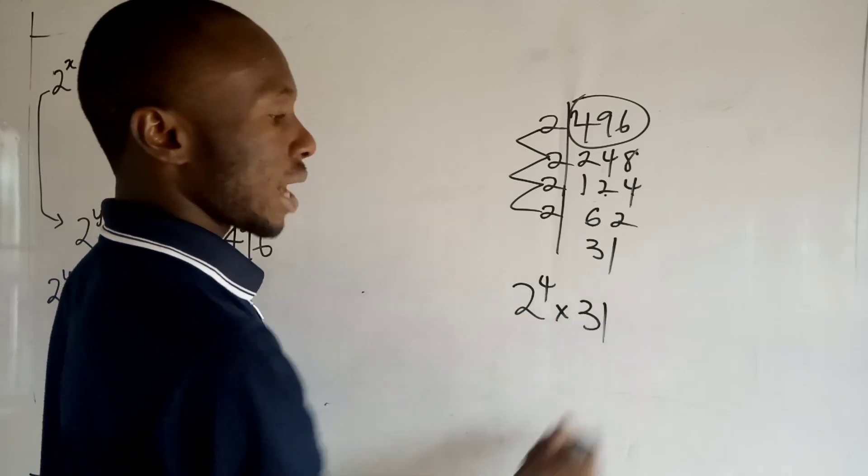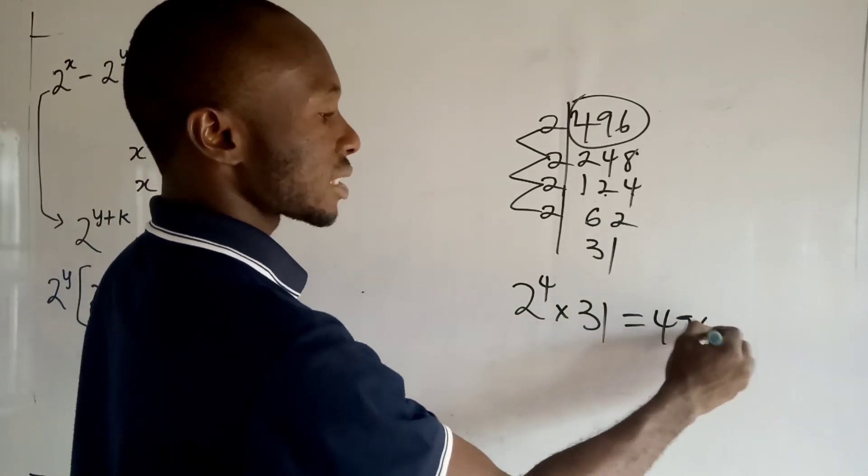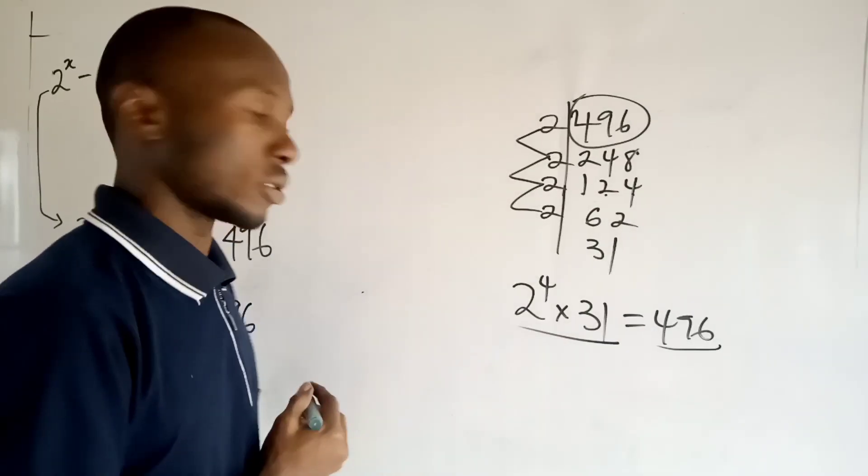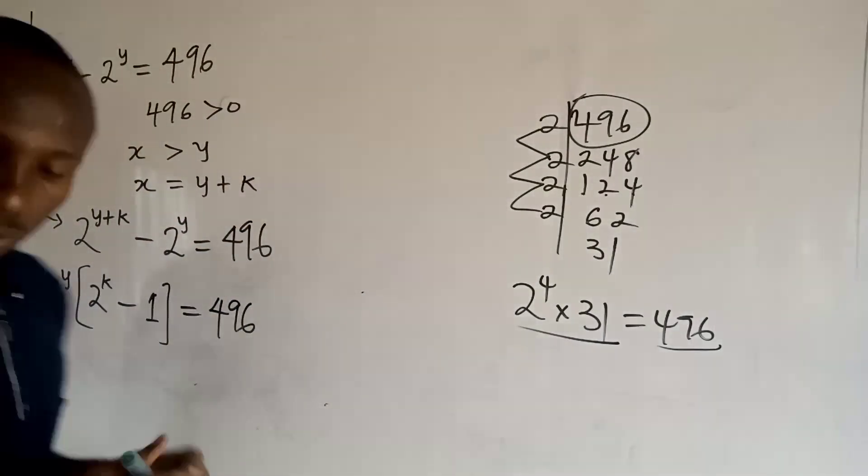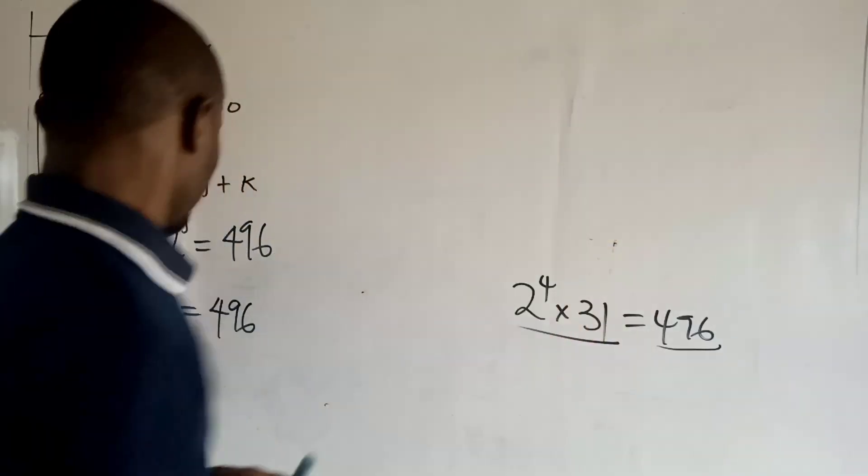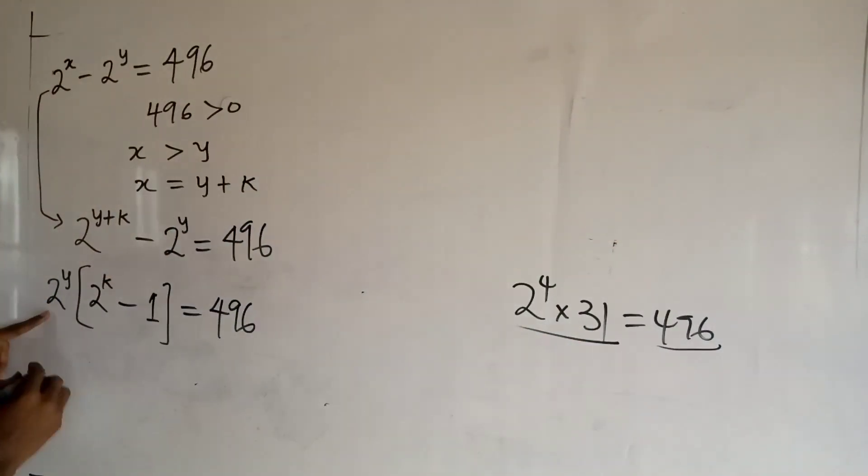So I'm going to replace 496 with this expression. Therefore I will have 2 to the power y into 2 to the power k minus 1.